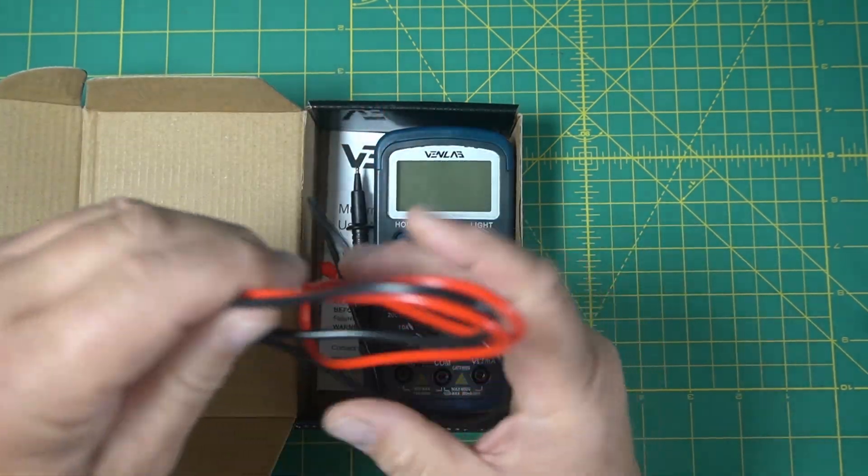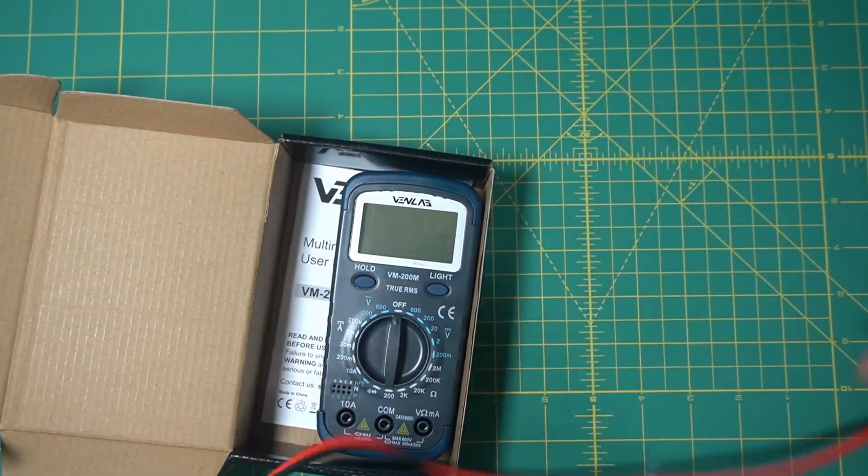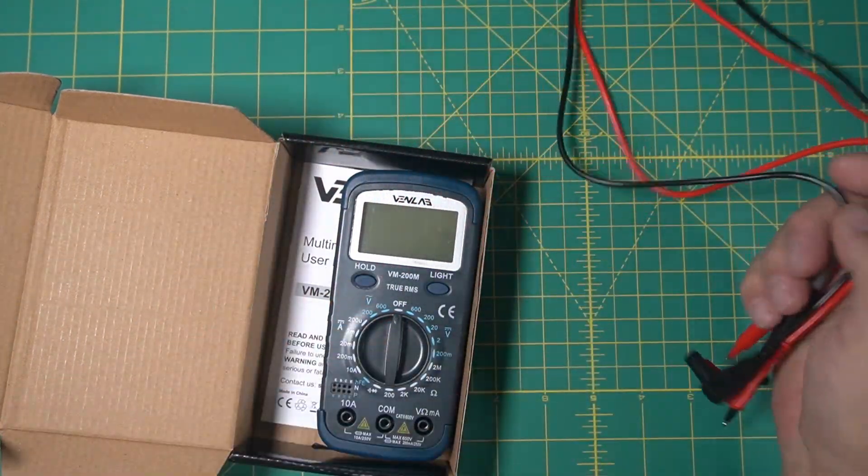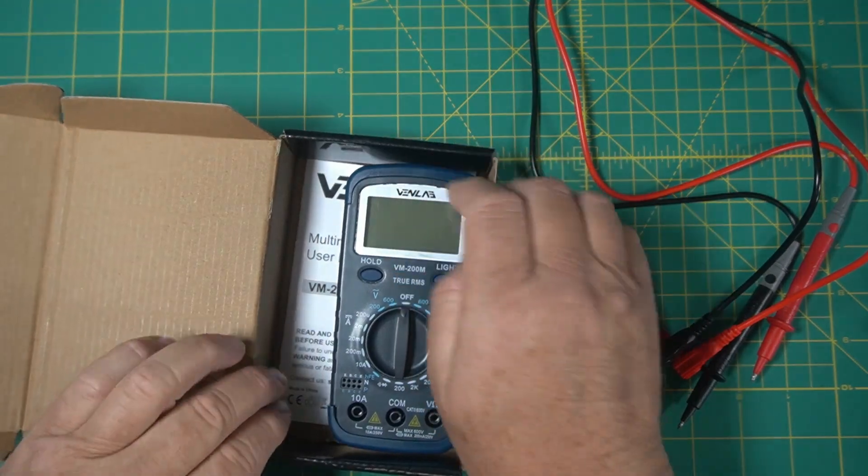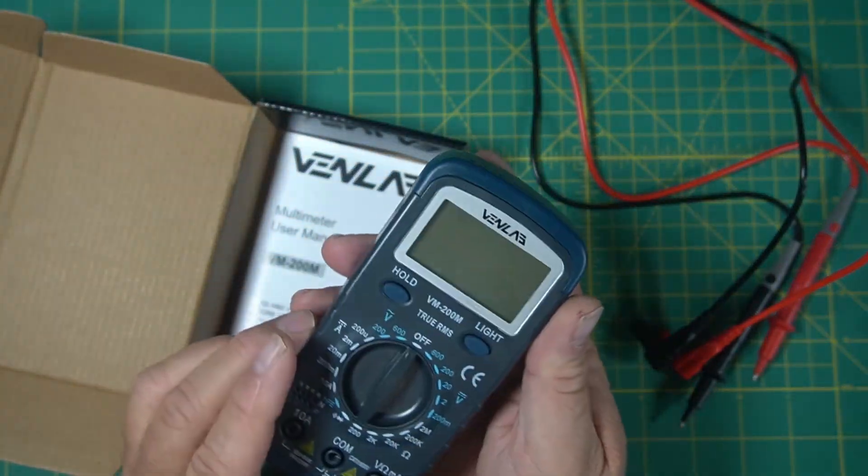It comes with your cables. These cables, they're a couple feet long. Yeah, they're about two and a half feet long. Not the longest ones, but usually plenty long enough. Now it did come with batteries also, and here's the multimeter.